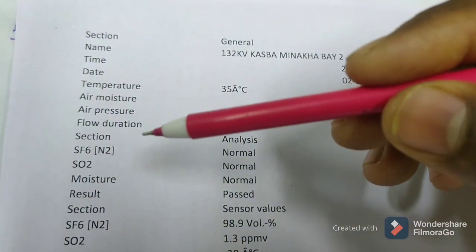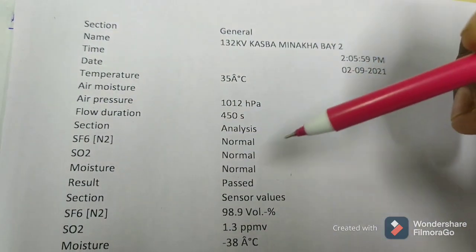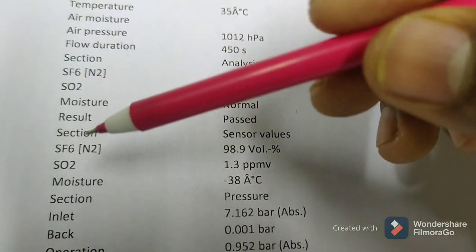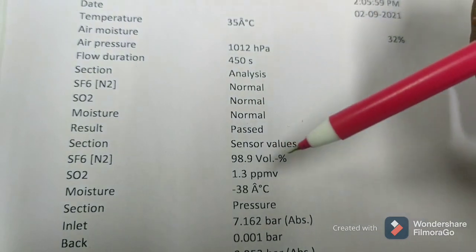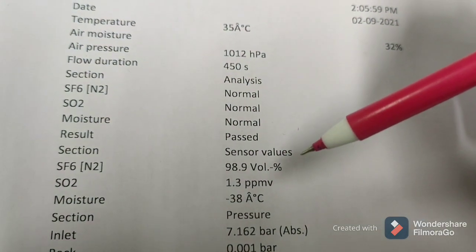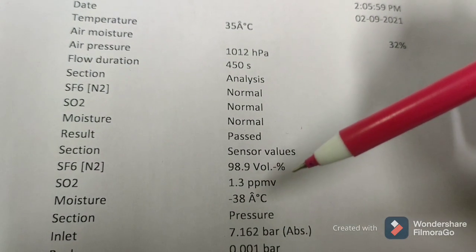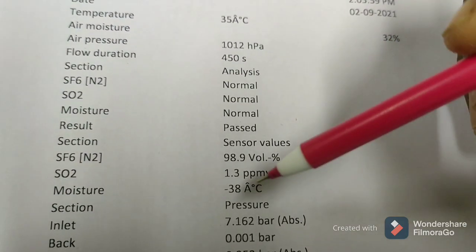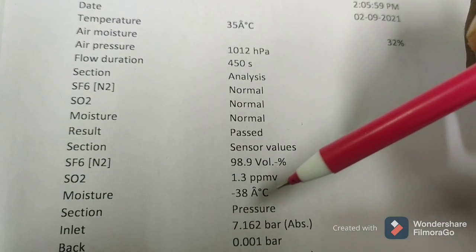we are getting SF6 normal, SO2 normal, and moisture also normal. The result has passed. The SF6 N2 percentage volume is 98.9%, SO2 is 1.3 ppmv, and the moisture is -38°C.